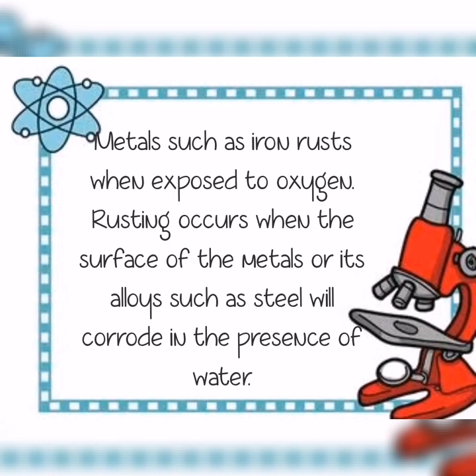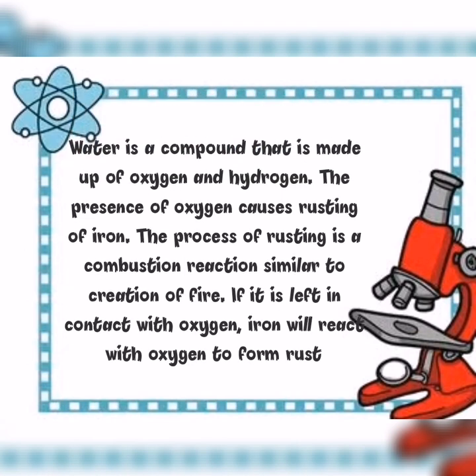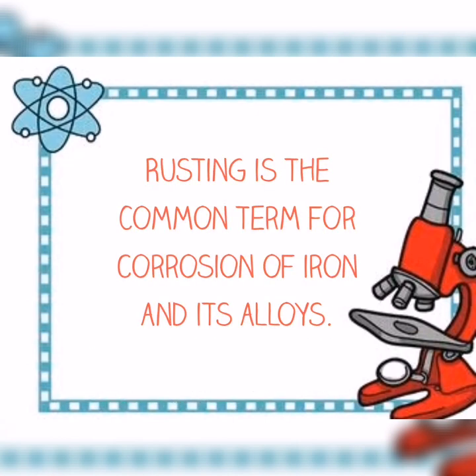Metals such as iron rust when exposed to oxygen. Rusting occurs when the surface of metals or their alloys, such as steel, corrode in the presence of water. Water is a compound made of oxygen and hydrogen, so the presence of oxygen causes rusting of iron. The process of rusting is a combustion reaction similar to the creation of fire. If iron is left in contact with oxygen, it will react with oxygen to form rust. Rusting is the common term for corrosion of iron and its alloys.